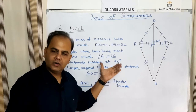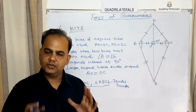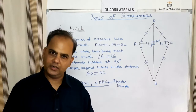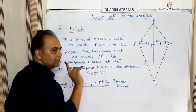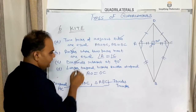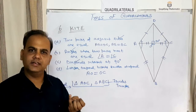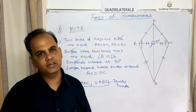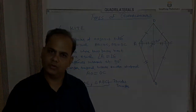Now we will compare all the properties of the different types of quadrilaterals so you can easily understand the differences between them. The key differences are based on three things: sides, angles, and diagonals. Based on these three points, we can differentiate between the various types of quadrilaterals.